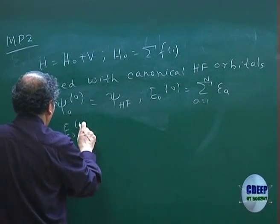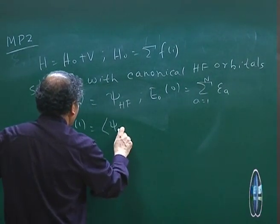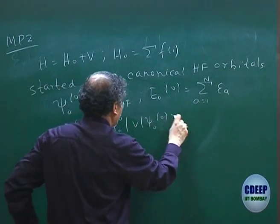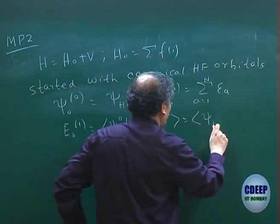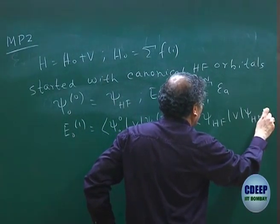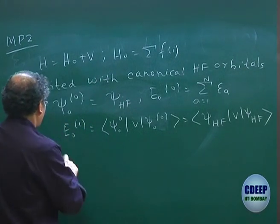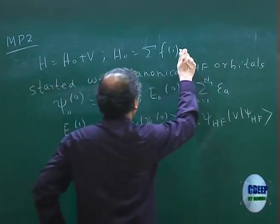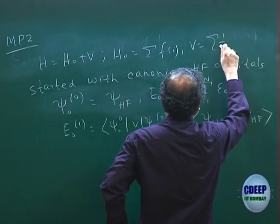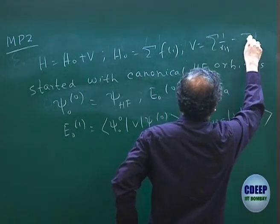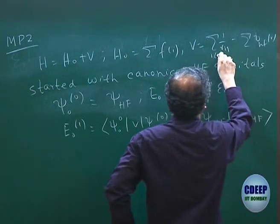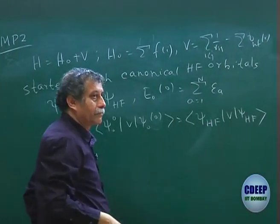We had E naught 1, which was the expectation value of psi 0,0 with V and psi 0,0, which is psi Hartree-Fock V psi Hartree-Fock. V was essentially the sum over 1/R_ij minus the Hartree-Fock one-particle Fock potential.